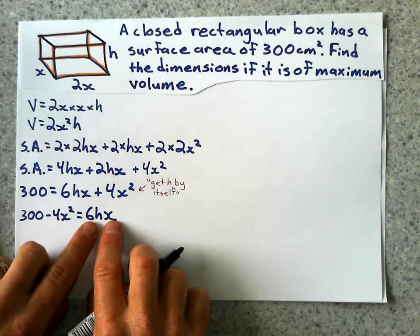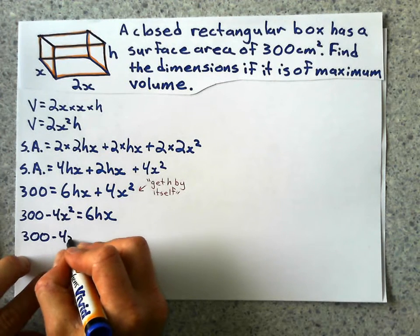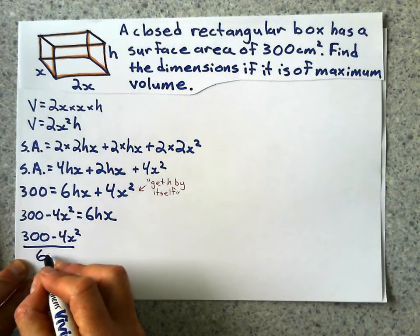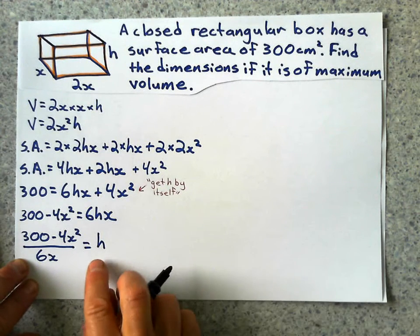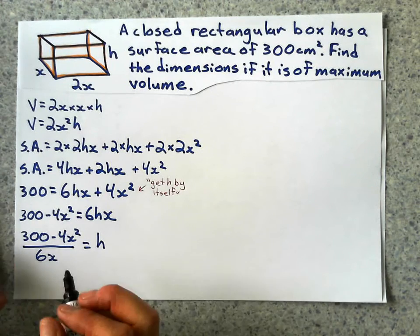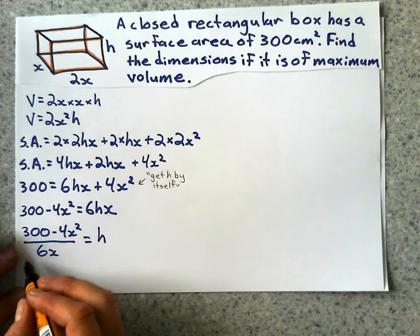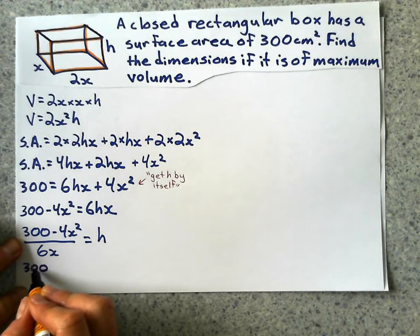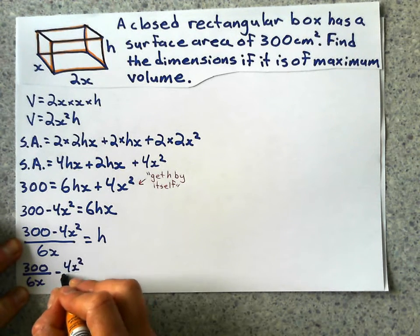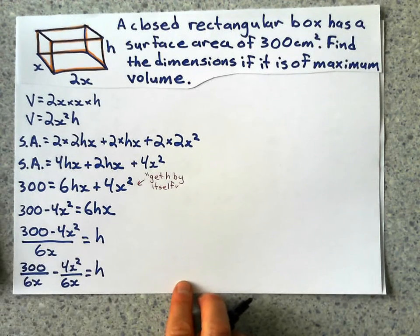That's right. We're going to divide by 6x over here. So I'm going to say 300 minus 4x squared divided by all that stuff there, which is 6x, will give me h by itself. Now here, I can clean this up a little bit. And to do that, remember calculus, we want to write stuff, it's a little bit easier when we write it in individual terms. So I'm going to say this is 300 divided by 6x minus 4x squared divided by 6x.